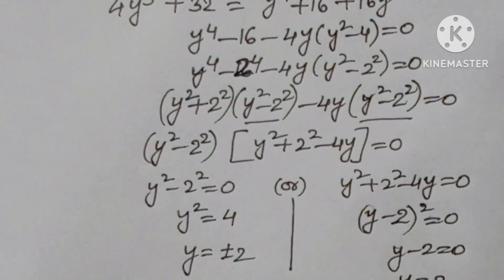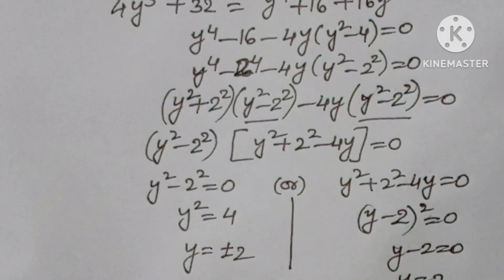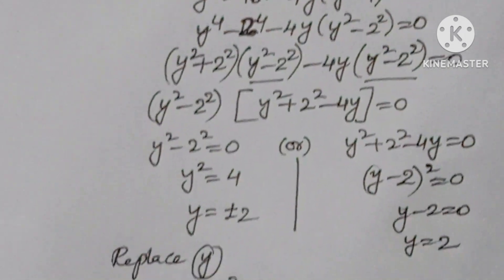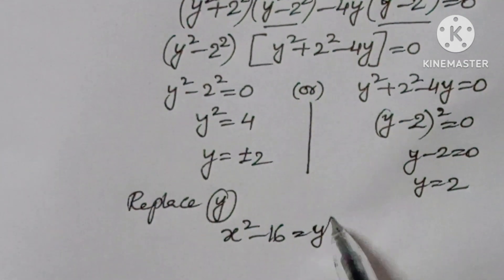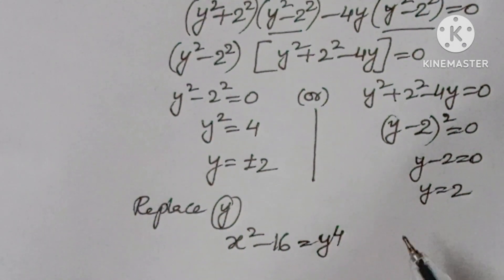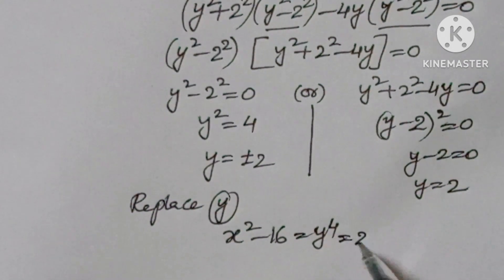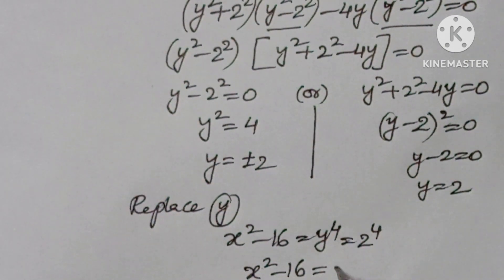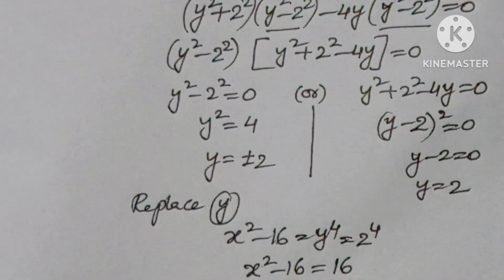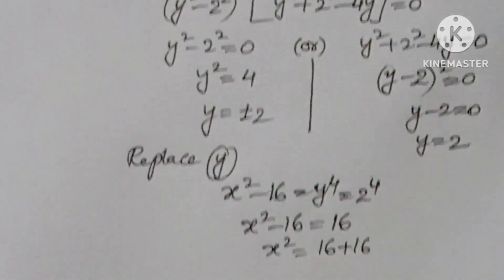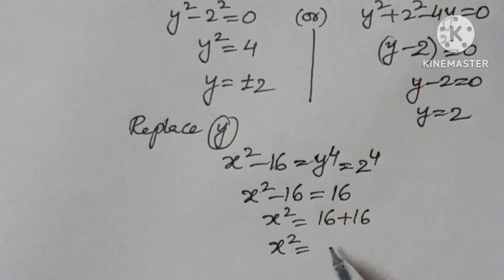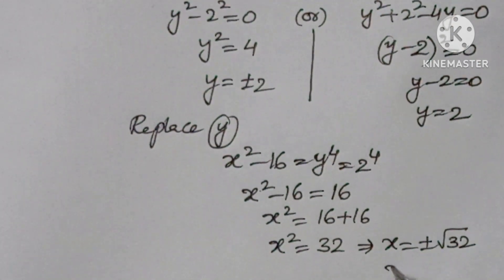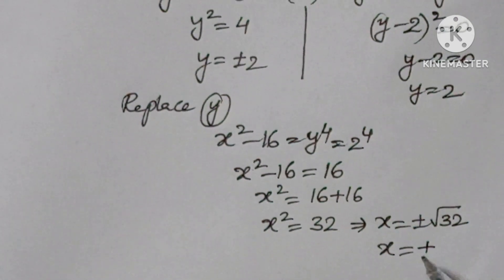Now replace y back. Since x squared minus 16 equals y to the power of 4, substituting y equals 2 gives x squared minus 16 equals 2 to the power of 4 equals 16. Therefore x squared equals 32, which implies x equals plus or minus root 32, which simplifies to plus or minus 4 root 2.